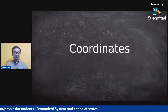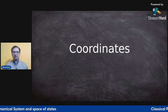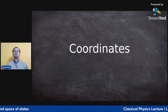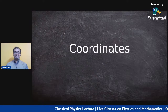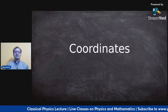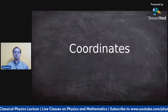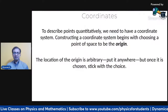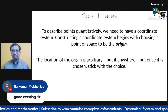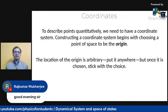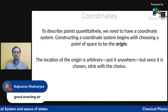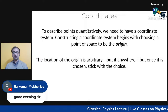In case of a coordinate system, in order to describe any point quantitatively, we need what is called a coordinate system. Constructing a coordinate system begins with choosing a point in space as the origin.